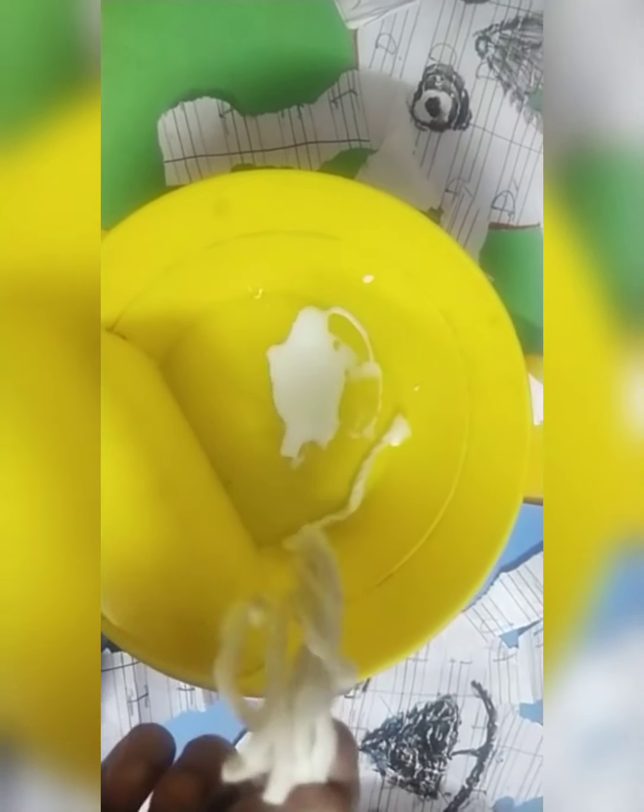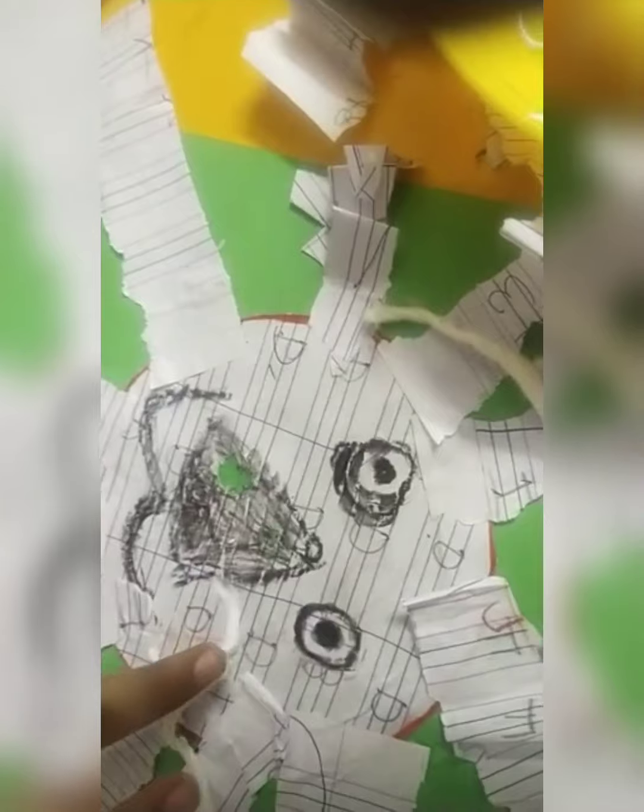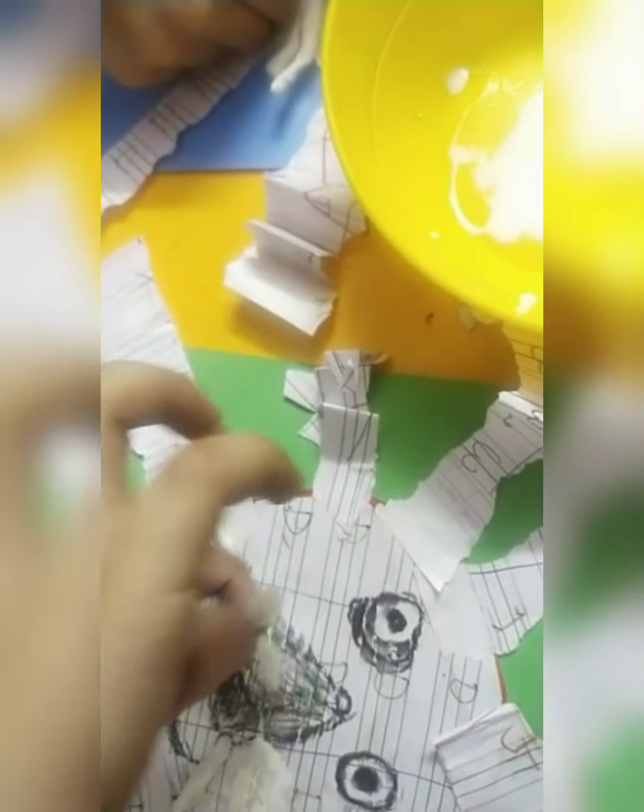Now we have to make whiskers with cotton wicks. This is a cotton wick. We dip it in the color and gently press it. We will paste it as the whiskers.